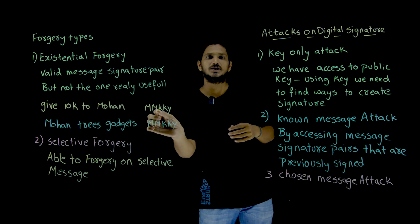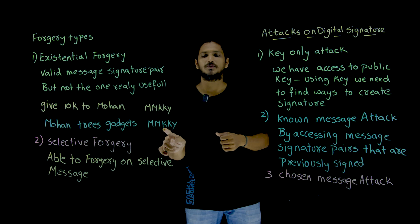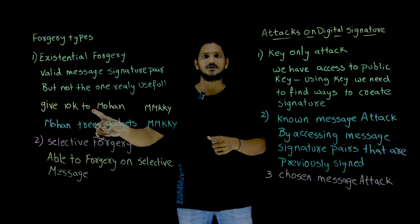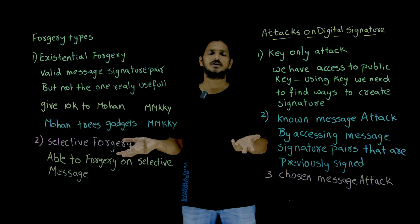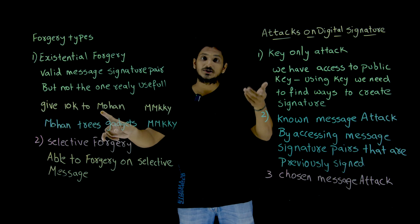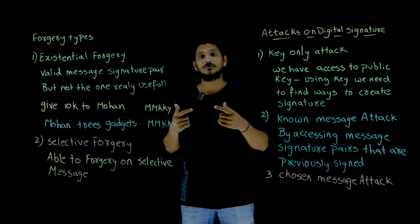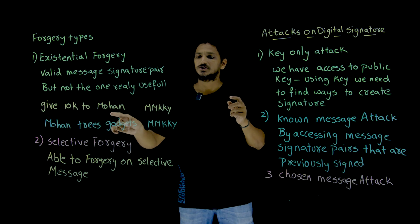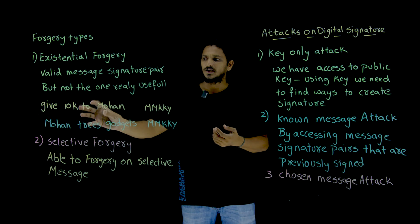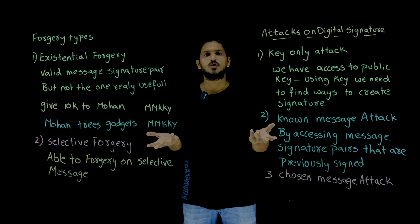For example, 'Mohan trees gadgets' also gives the same signature 'mmkky,' but that message is not useful — it is not meaningful, so you cannot send it. If you somehow identify a meaningful message that gives the same signature, such as '50k to Mohan,' then it would be helpful. Identifying a valid but meaningless message-signature pair is what we call existential forgery. Using this type of forgery it won't be very effective.